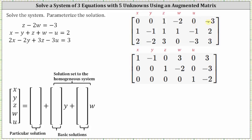The second equation does contain all the variables. The coefficient of x is one, the coefficient of y is negative one, the coefficients of z and w are both one, the coefficient of u is negative one, and the constant is two. For the third equation, notice we are missing the w term. The coefficient of x is two, y is negative two, z is three, w is zero, u is negative three, and the constant is three.